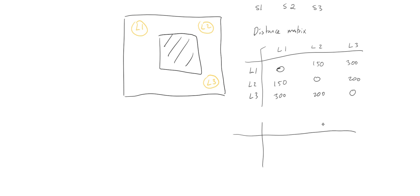We have another matrix: the travel trip matrix. We've got three supply points S1, S2, S3 — these are the points where you get your materials on the construction site. We don't have values for the same supply points. The values are: 1000, 110, and again it's triangular — same values in the mirror positions — and a 10.